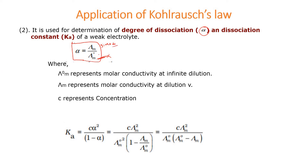This lambda naught M we generally calculate by using Kohlrausch's law. Lambda naught M is equal to lambda of cation plus lambda of anion. Whereas molar conductance at given dilution or given concentration uses the formula: K into 1000 divided by molarity.